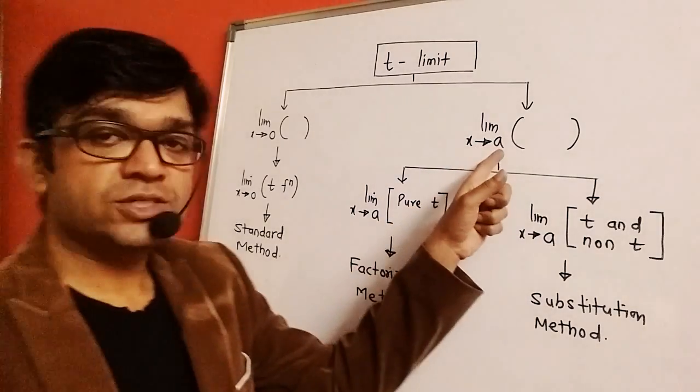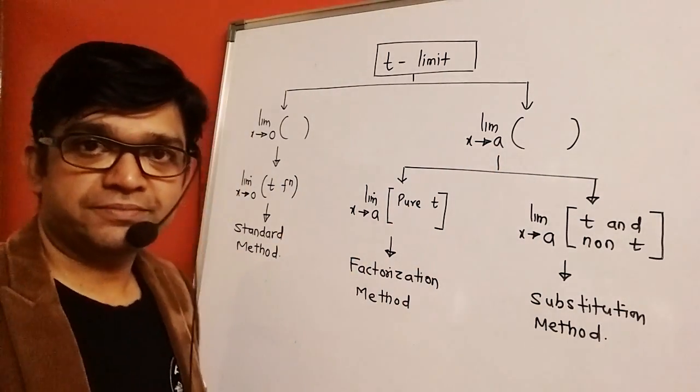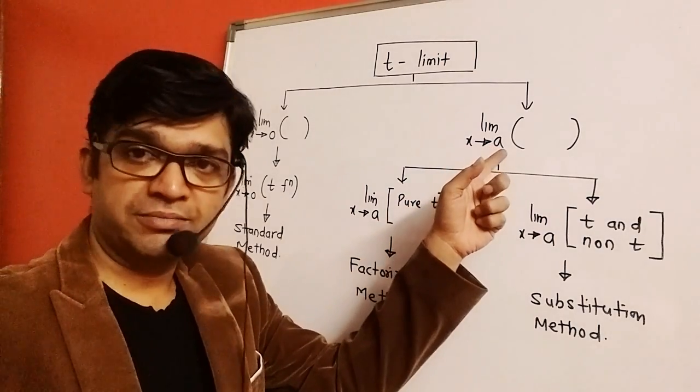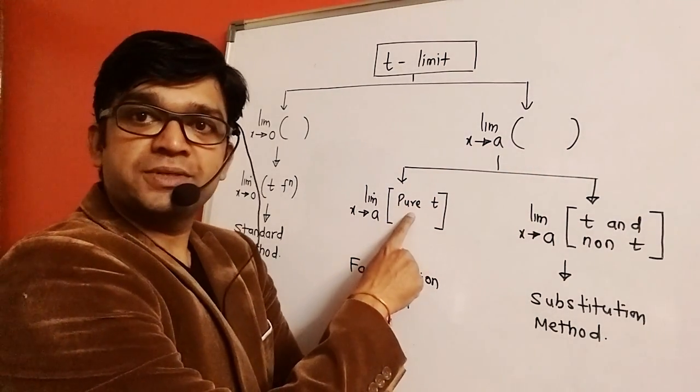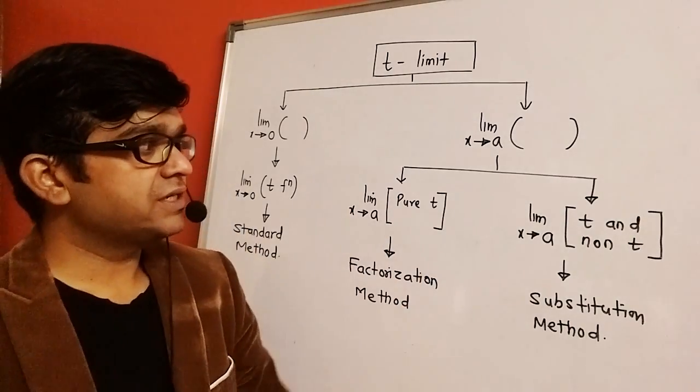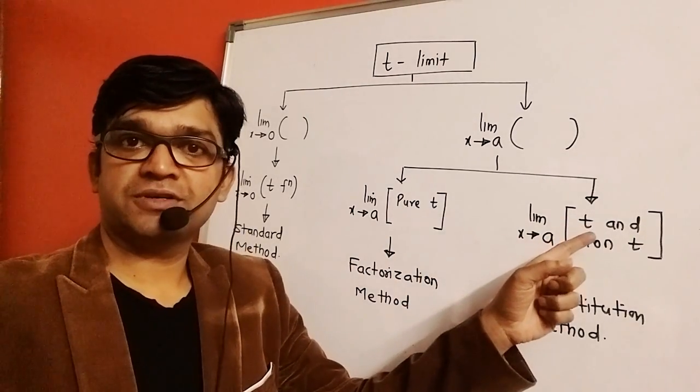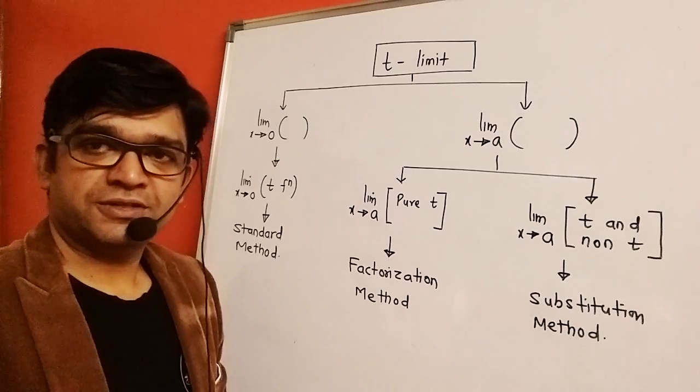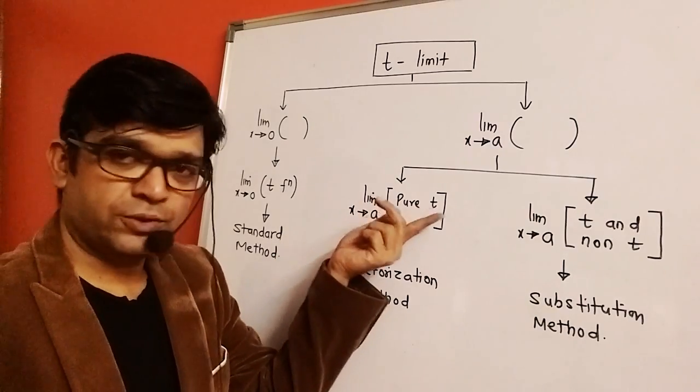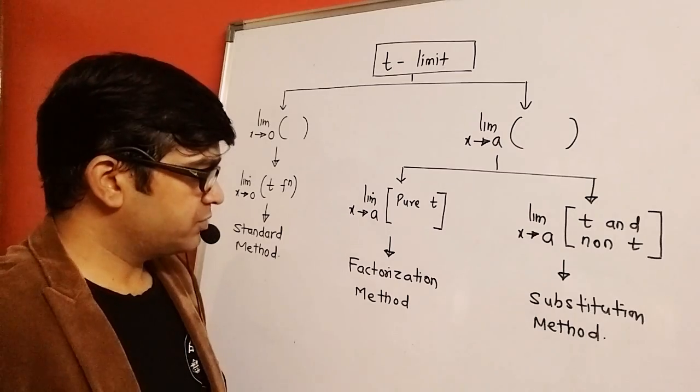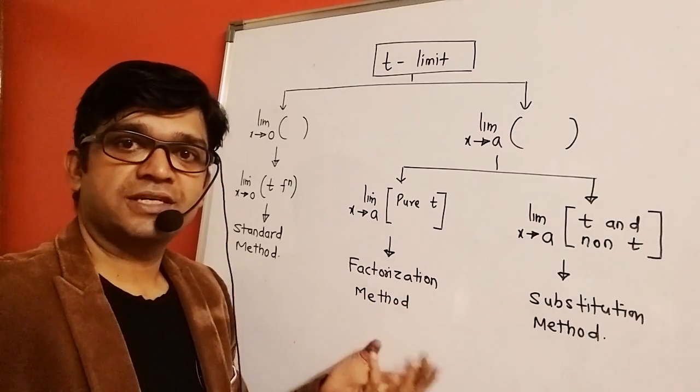If x tends to a non-zero number, you have to be very careful. Then you have to look whether it is a pure trigonometry function or it is having some trigonometry function combined with non-trigonometry function. If x is tending to a non-zero number and it is pure trigonometry function, then we are going to use factorization method.